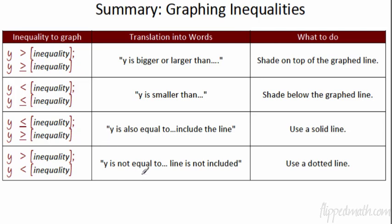Let's summarize the graphing part in a nice little table. If you get y is greater than, or greater than or equal to — think of it as y is bigger or larger than — so you shade on top of the graph line because the numbers on top are bigger. If y is less than or less than or equal to, that's the same as smaller than, so you shade below the graph line. For the line type: if it's less than or equal to, or greater than or equal to, you include the line — use a solid line. If it's just greater than or less than, the line is not part of the inequality, so use a dotted line.